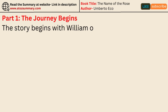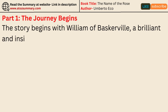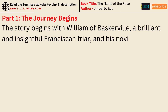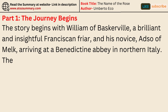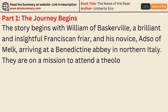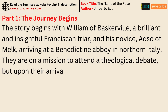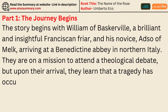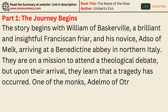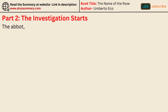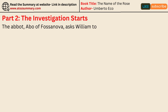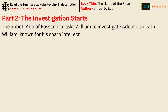The story begins with William of Baskerville, a brilliant and insightful Franciscan friar, and his novice Adso of Melk, arriving at a Benedictine abbey in northern Italy. They are on a mission to attend a theological debate, but upon their arrival they learn that a tragedy has occurred. One of the monks, Adelmo of Otranto, has died under mysterious circumstances. The abbot, Abio of Fasanova, asks William to investigate Adelmo's death. William, known for his sharp intellect and logical reasoning, agrees to help.